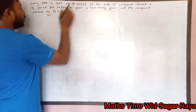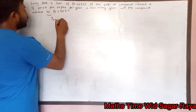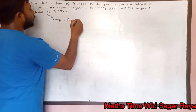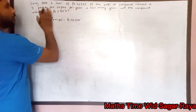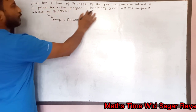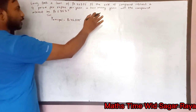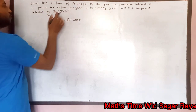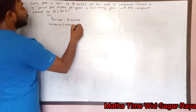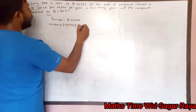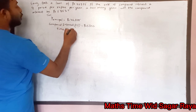So the principal is rupees 46,875. The rate of compound interest is four paisa per rupee per year. We need to find the time — in how many years will the compound interest be rupees 5,853. So compound interest, CI, is given as rupees 5,853, and we have to find the time.